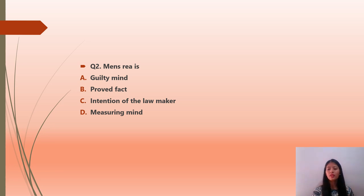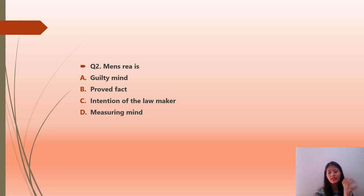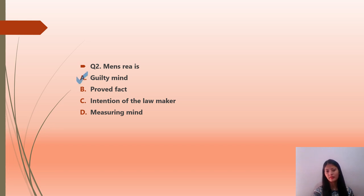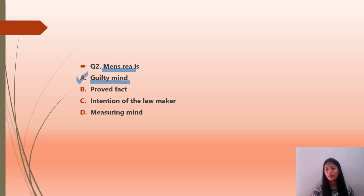Question number 2 is quite easy. It asks: what is mens rea? Option A guilty mind; option B proved fact; option C intention of the lawmaker; option D measuring mind. The answer is option A — mens rea means guilty mind. A guilty mind is very important for a crime to be committed. You should also know the famous maxim related to this term.